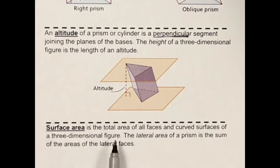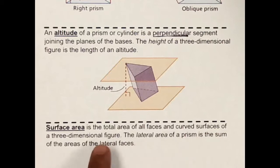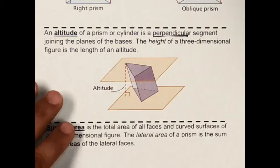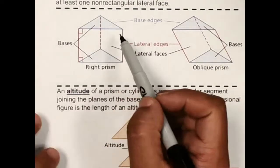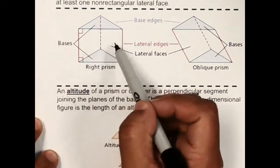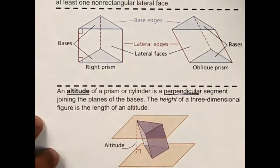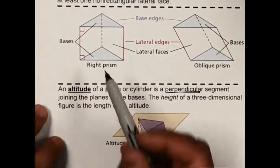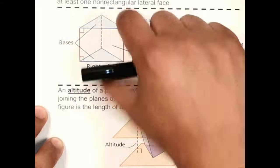Now we're going to define surface area as the total area of all the faces and curved surfaces of a three-dimensional figure — that includes the bases. The lateral surface area, which is all the rectangles, does not include the two bases.